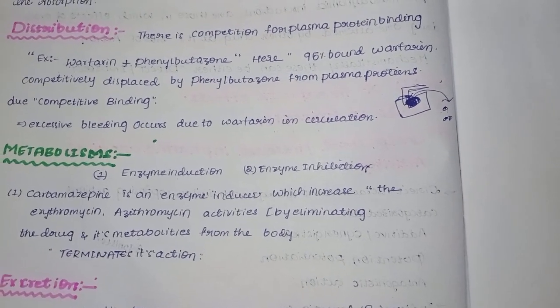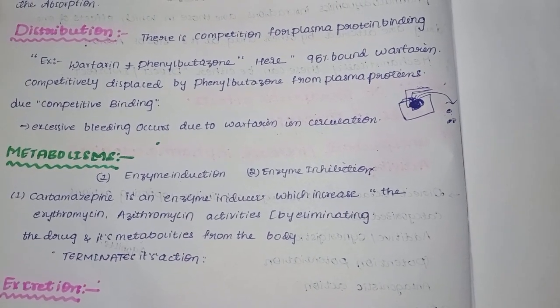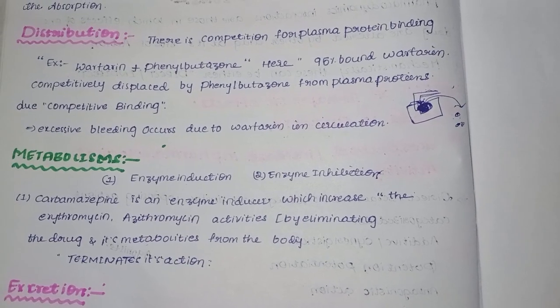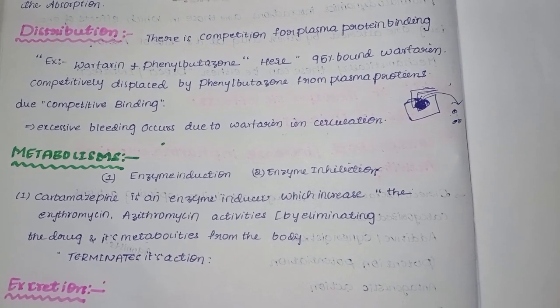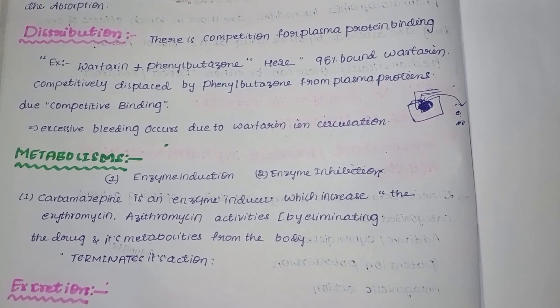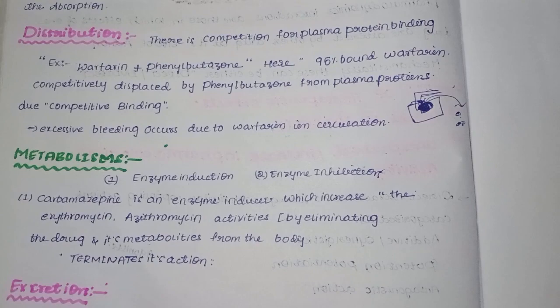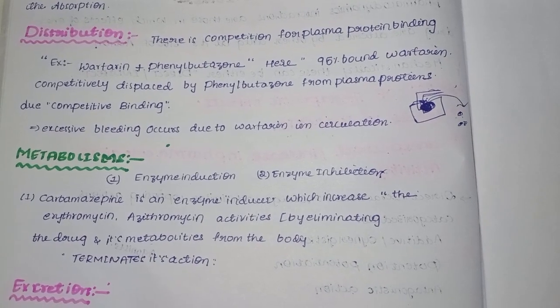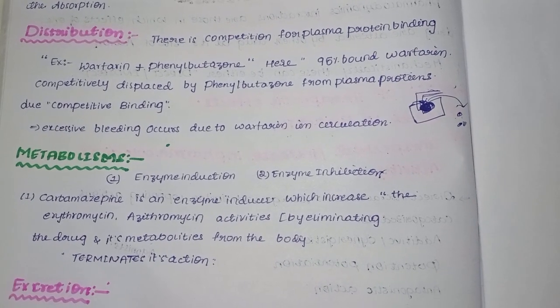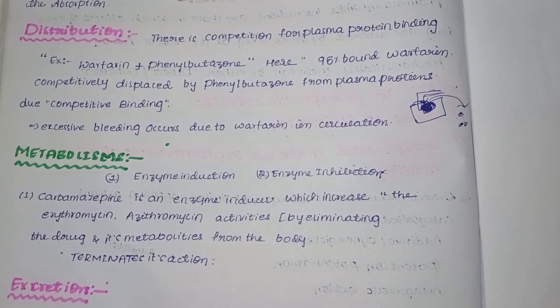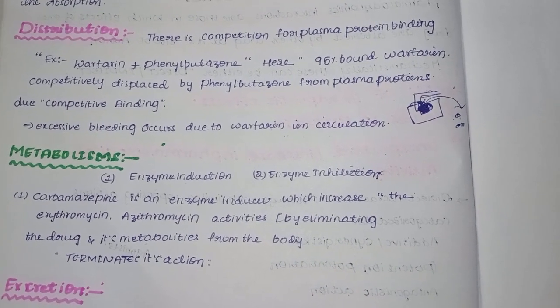For example, carbamazepine is an enzyme inducer. Erythromycin activity is not adequately controlled when carbamazepine is present. This means our body has elevated levels of erythromycin because carbamazepine induces the enzymes responsible for metabolizing it.